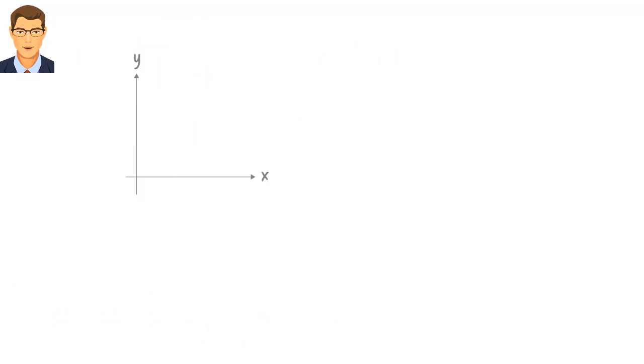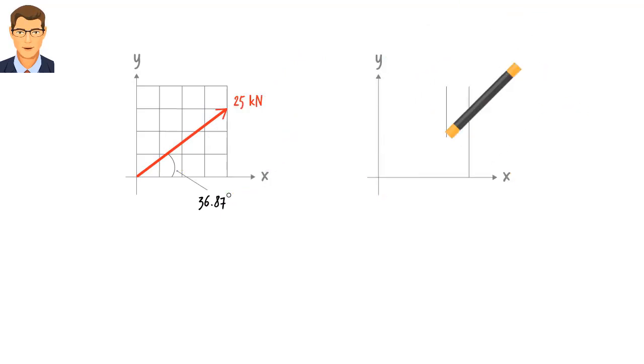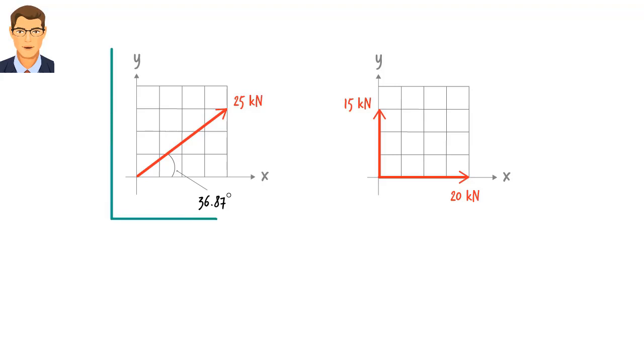Here is a force vector having a magnitude of 25 kN. The vector makes a 36.87-degree angle with x-axis. Since the vector lies in an xy-plane, it can be represented using a vector along x-axis and a vector along y-axis, like this. We often want to represent vectors in terms of their x and y components because it makes vector addition simpler. But how do we go from here to here? How do we determine the magnitude of these two component vectors?